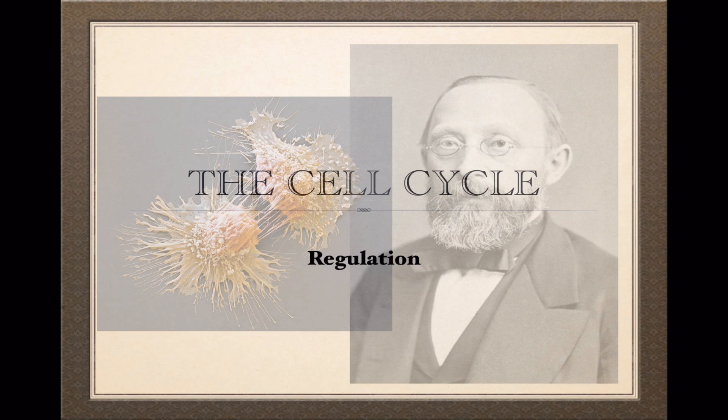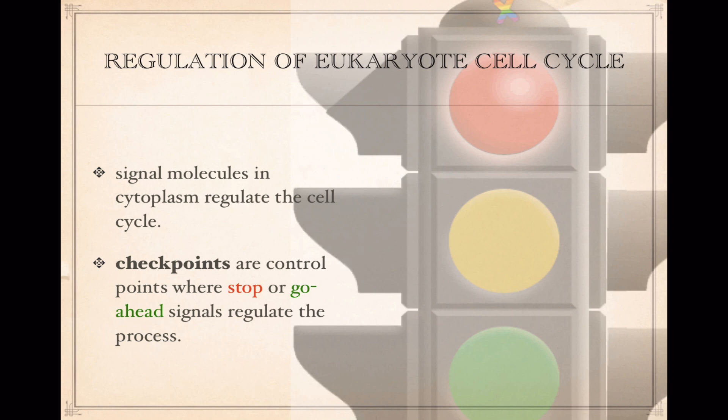This is Ed Chapman, and this video cast is going to focus on regulation of the cell cycle. You can think of the cell cycle as a process that can be switched on or switched off, and it's controlled by signal molecules that work a lot like stoplights — they're there to control the flow of a process, just like a stoplight controls the flow of traffic.